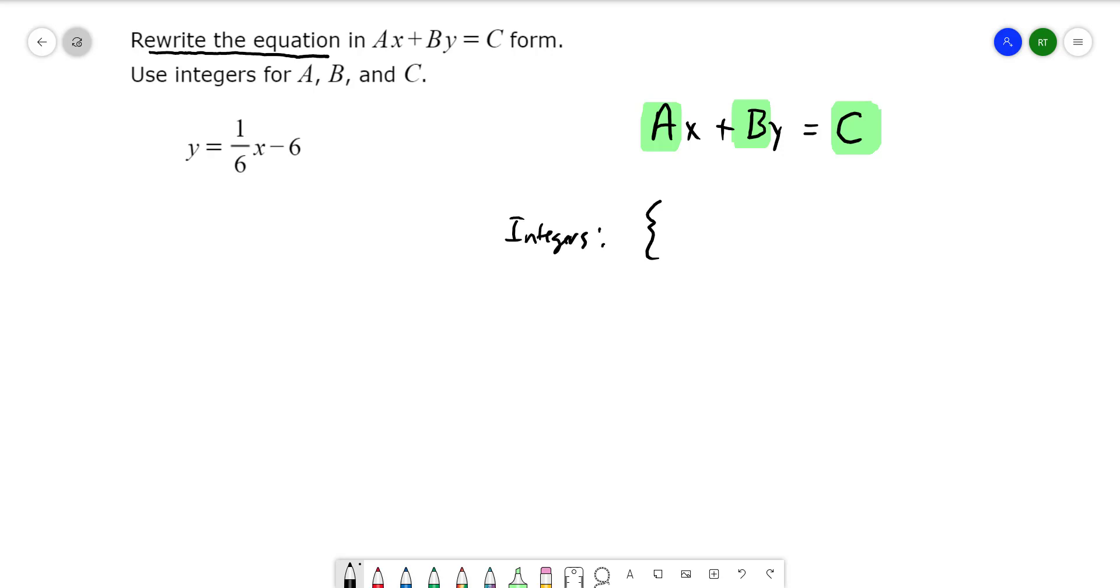So integers, if you forgot, integers is a set that looks like this. So numbers like negative 3, negative 2, negative 1, 0, 1, 2, 3, dot dot dot. So any number that fits this pattern.